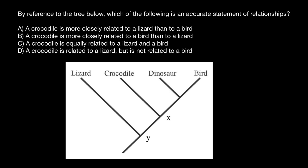Here are the four statements — we have to choose the one which is correct. Variant A: a crocodile is more closely related to a lizard than to a bird. Statement B: a crocodile is more closely related to a bird than to a lizard. Statement C: a crocodile is equally related to a lizard and a bird — it is in the middle, so probably equally related. And the last statement D: a crocodile is related to a lizard, but not related to a bird.